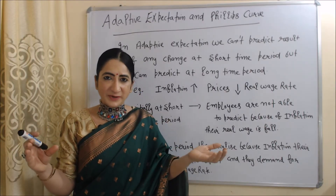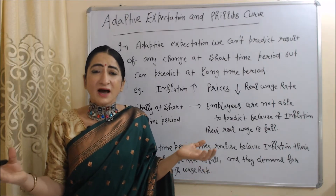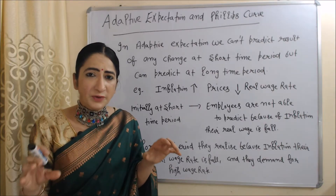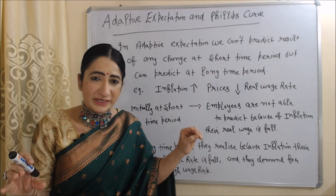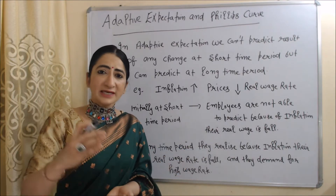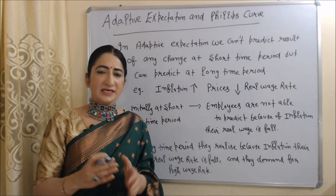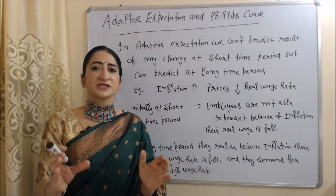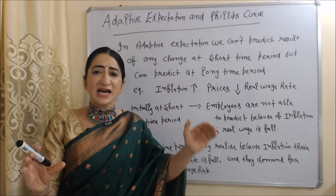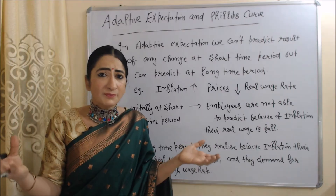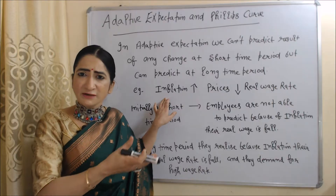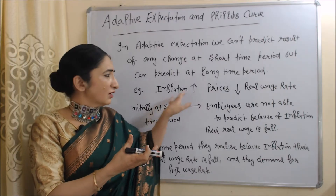Now we are going to talk about adaptive expectation and the Phillips curve. In the case of adaptive expectation, we are not able to predict the result of any change in the short time period, but we can predict in the long time period. For example, through any government policy, inflation increases in the economy.